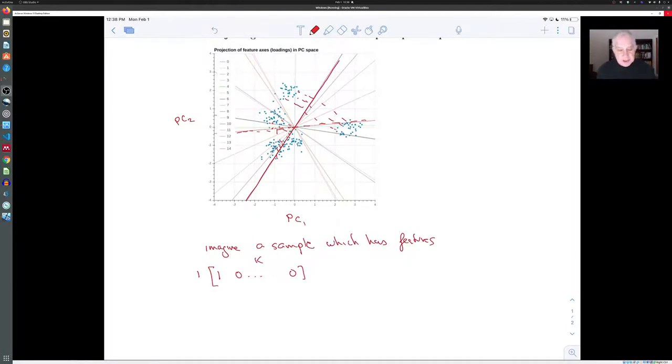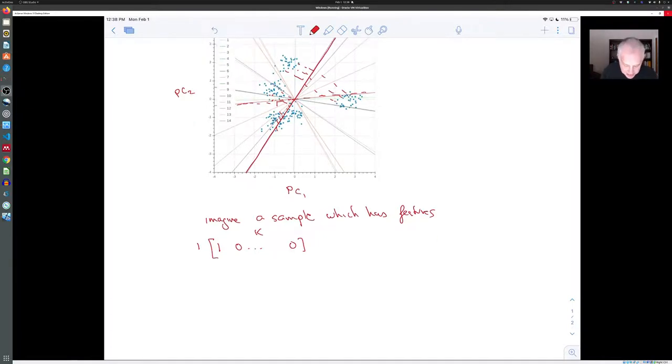Well, if there were such a sample in the high dimensional space, it's like the I vector for the first feature. And we could ask, how does that project down into the principal component space? Well, it projects down by multiplying it by the vector, by the matrix U, where U, the columns of U, are the principal eigenvectors.